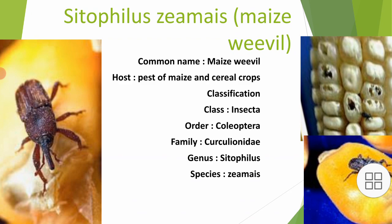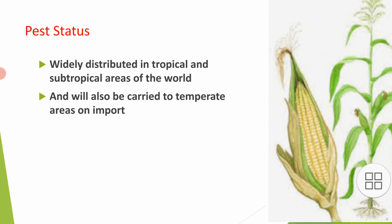Classification of Sitophilus zeamais: Class Insecta, Order Coleoptera, Family Curculionidae, Genus Sitophilus, Species zeamais. It belongs to Order Coleoptera and Family Curculionidae. Pest status: widely distributed in tropical and subtropical areas of the world, and can also be carried to temperate areas on import.